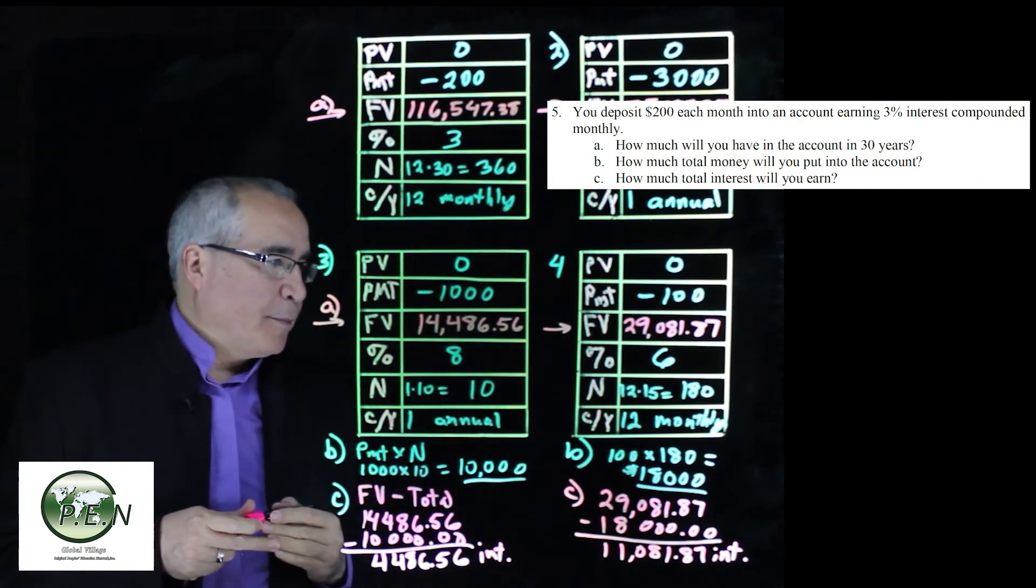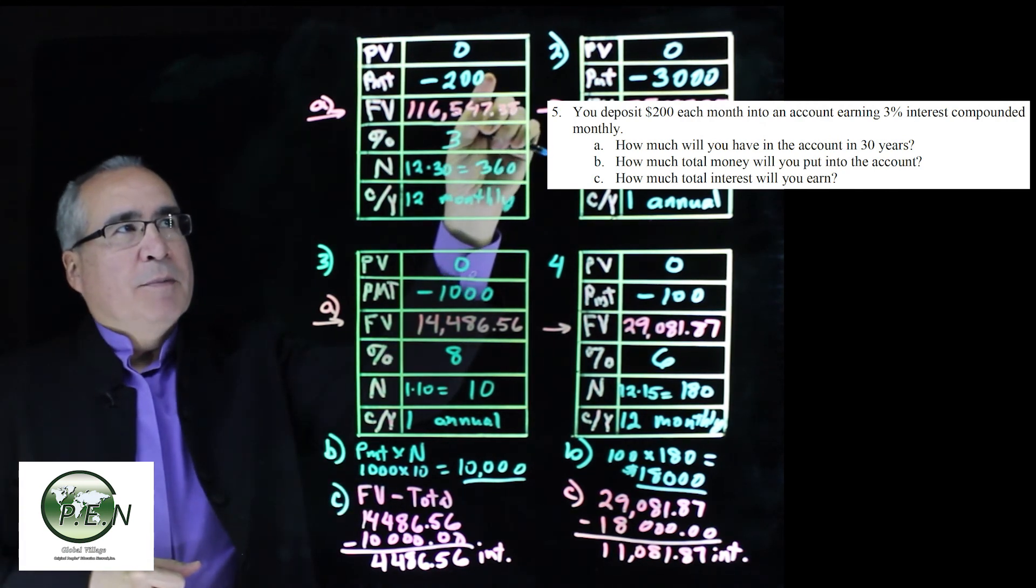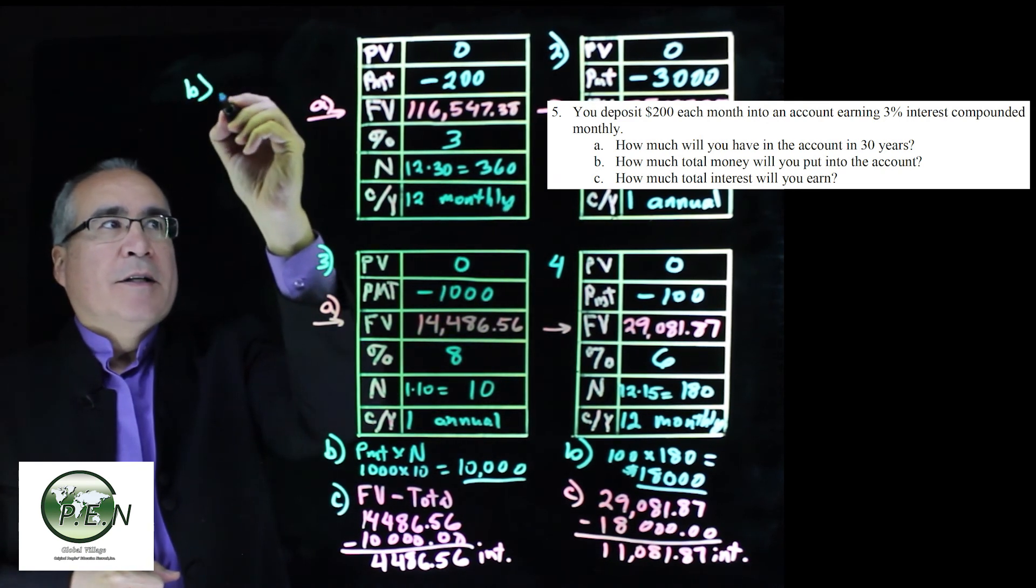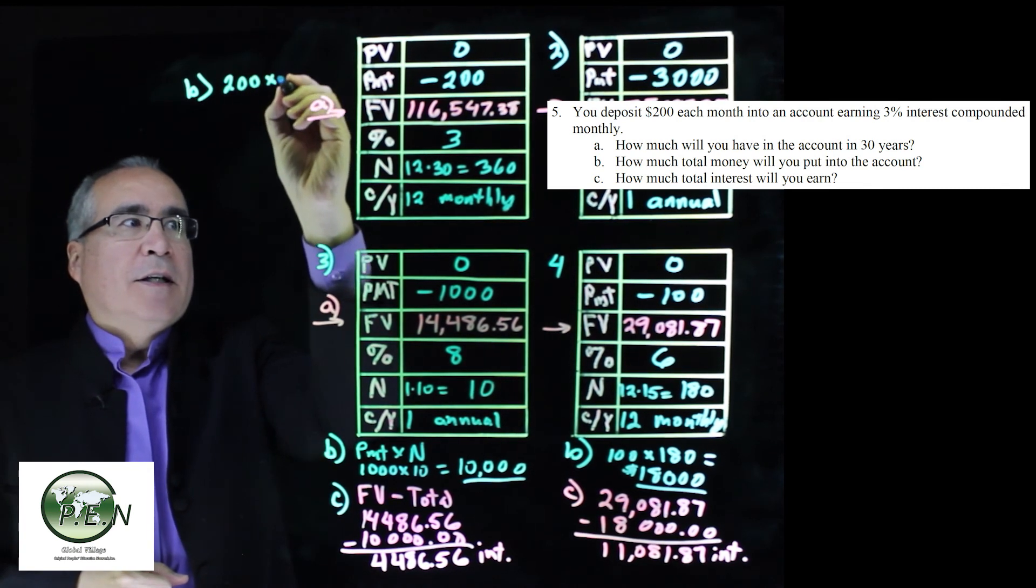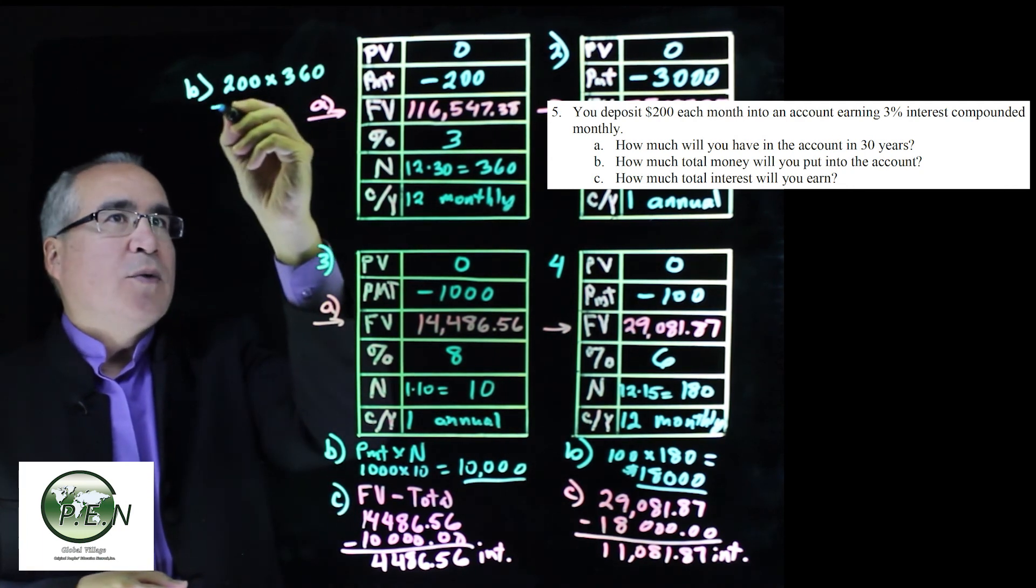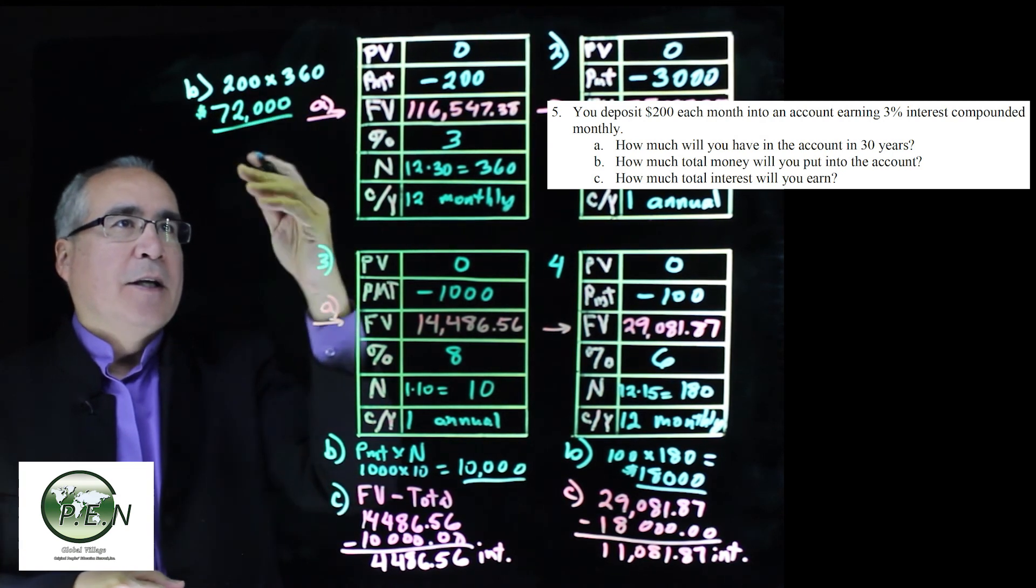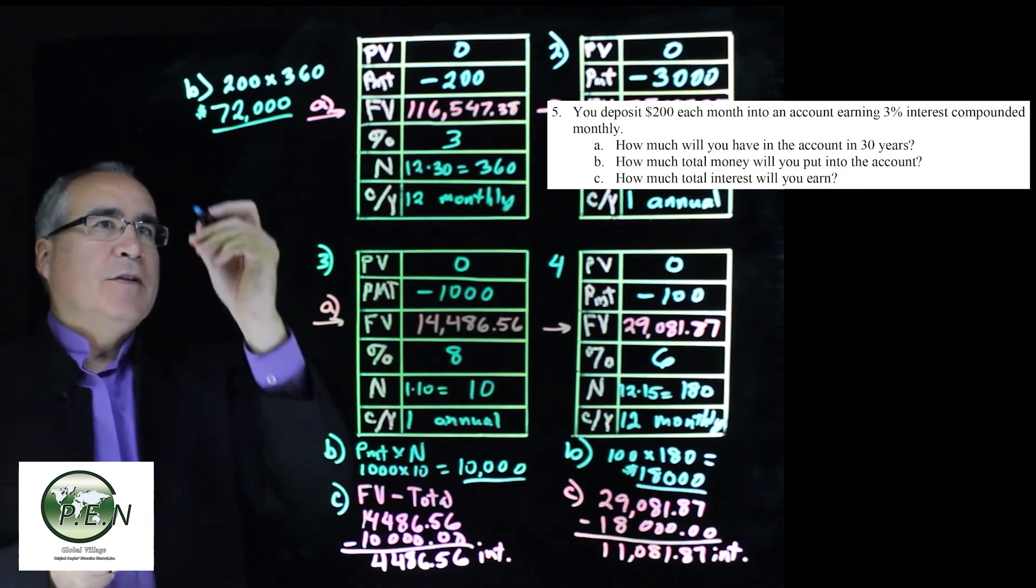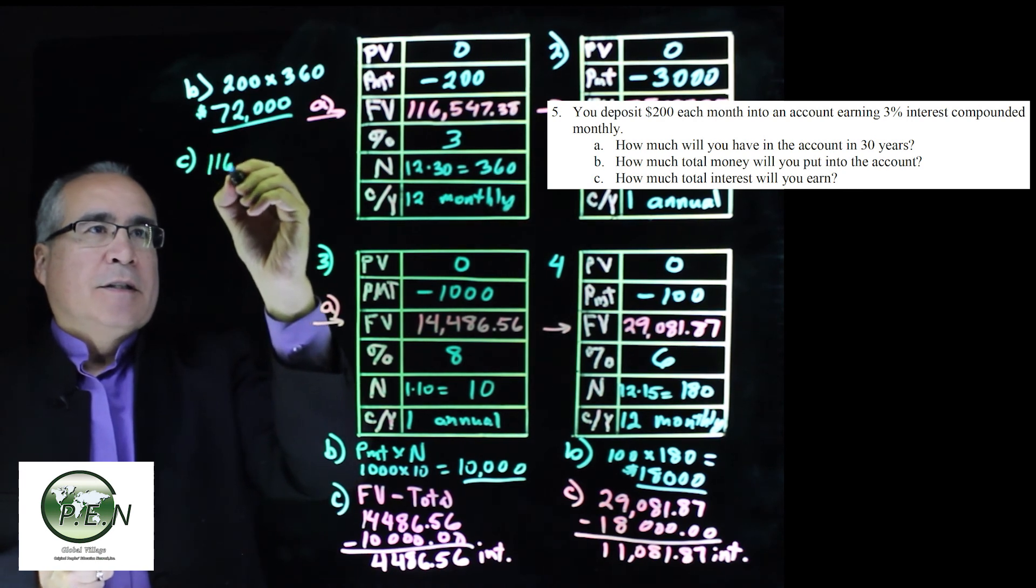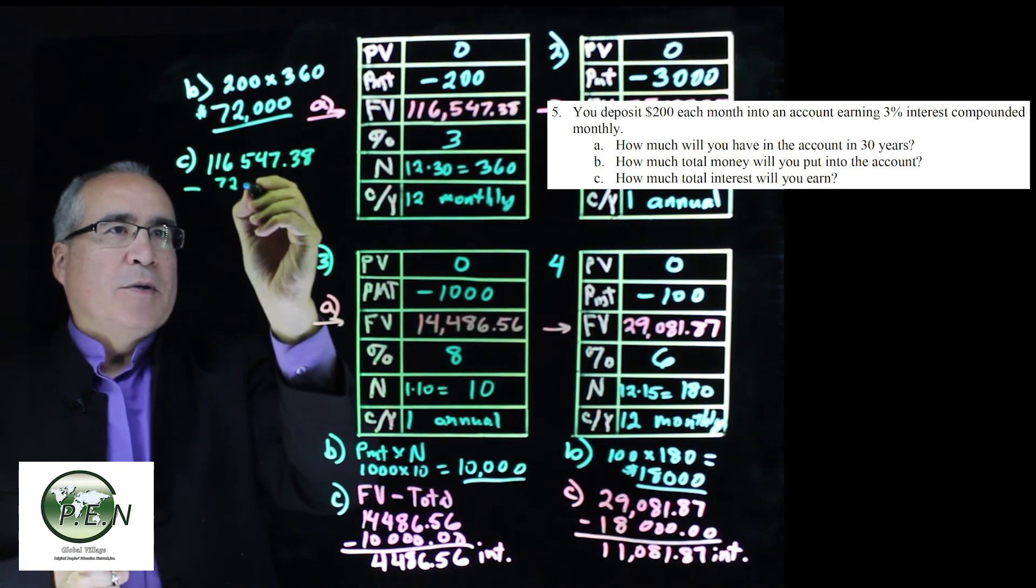Again, we're going to want to find out how much interest, but before we can do that, we have to know how much we put in personally. So we put in $200 every month for 360 months. So the B part, we put 200 times 360. Multiply that out, we get $72,000 that we personally put into this account. Everything above the $72,000 is interest. So to calculate that, we take our future value, what we ended up with at the end, and we subtract off what we put in.